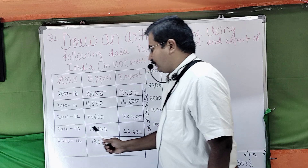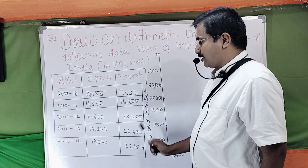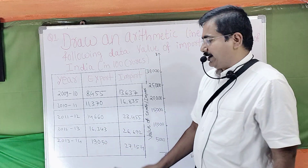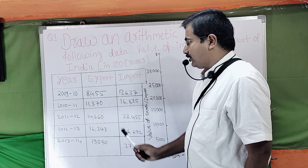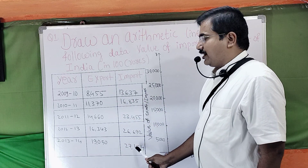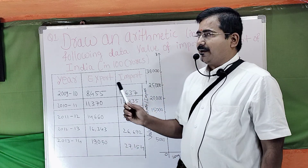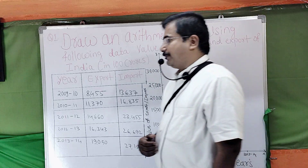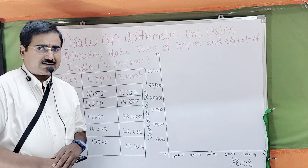Then 2012-13, export is 16,000. Then import is 26,000. Finally, 2013-14 year, export is 19,050 and import is 27,154. So it means that export is very less compared to import, which is taking the maximum place. This is the indication of the values, dear students.